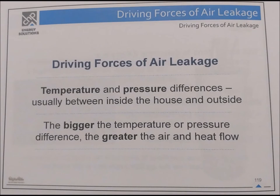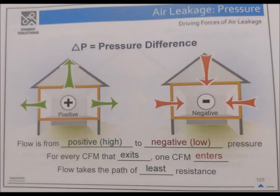Driving forces of air leakage: temperature and pressure differences, usually between inside and outside the house. The bigger the temperature or pressure difference, the greater the airflow and heat flow. Delta P equals pressure differences. Flow is from positive (high) to negative (low) pressure. For every CFM that exits, one CFM enters. Flow takes the path of least resistance.